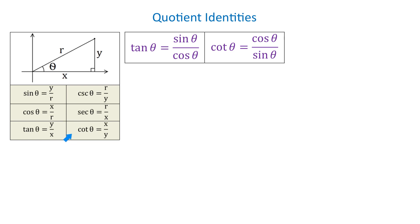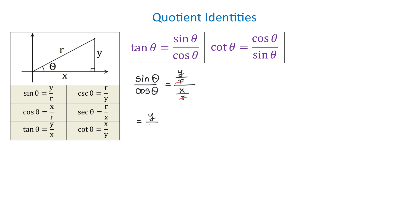To understand these identities, let's recall how the trigonometric functions are defined. In a right triangle with an acute angle theta, sine of theta is y over r and cosine of theta is x over r. Now, if we divide sine of theta by cosine of theta, we get y over r divided by x over r. The r cancels and we get y over x, which is tangent of theta. So tangent of theta equals sine of theta over cosine of theta.